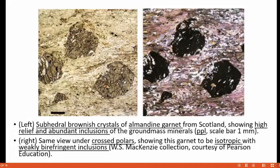This slide shows garnet in plain polarized light and cross-polars. The left side of the image shows subhedral brownish crystals of almandine garnet from Scotland, characterized by high relief and abundant inclusions, taken under plain polarized light. The right side shows the same view under crossed polars, where the garnet is isotropic. Sometimes the inclusions show weak birefringence.